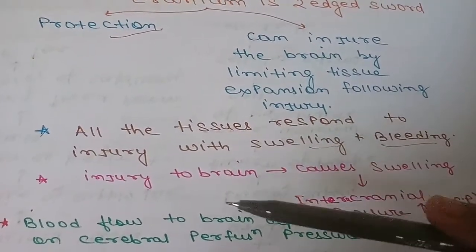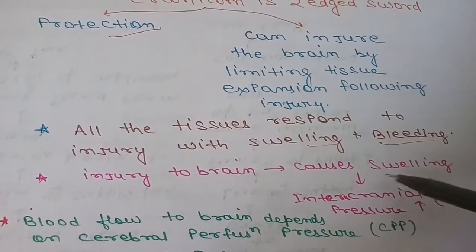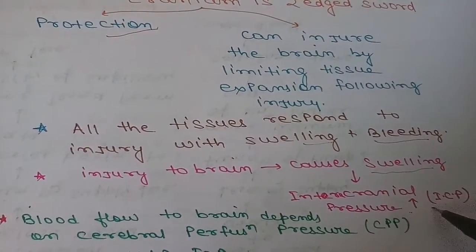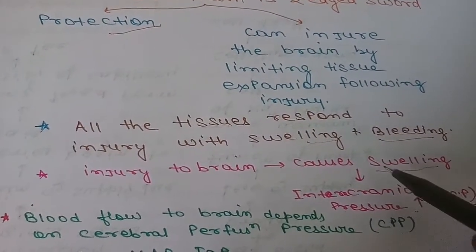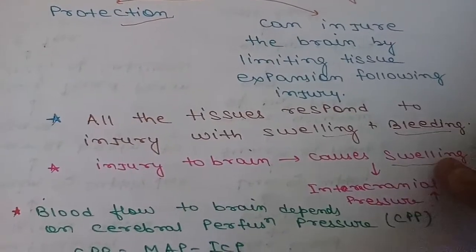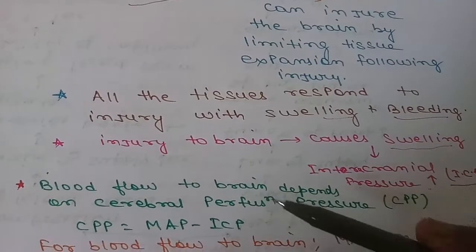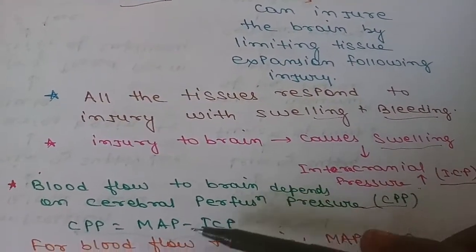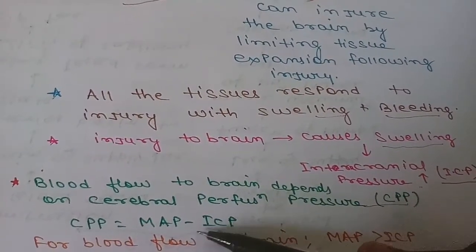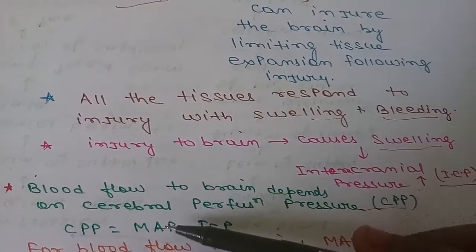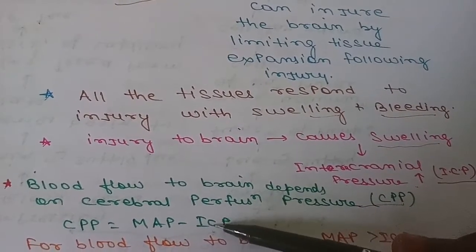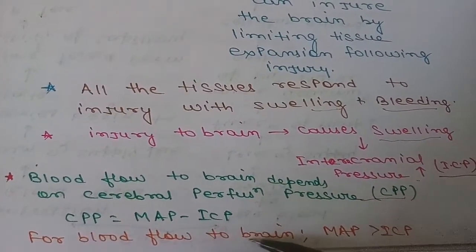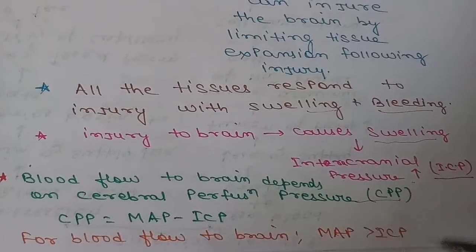All tissues, when injured, respond with swelling and bleeding. Injury to the brain also causes swelling, and once swelling occurs it leads to an increase in intracranial pressure. Now, cerebral perfusion pressure is defined as mean arterial pressure minus intracranial pressure. For normal blood flow to the brain, mean arterial pressure must be greater than intracranial pressure.